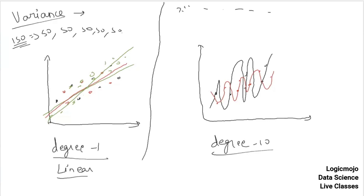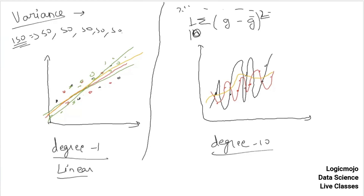Variance is calculated using a formula similar to the standard variance formula. If I train 10 such models, n equals 10. There will be multiple estimated models g, and a mean g. Variance measures how much my model varies when I change the data slightly. For the linear model the model was stable — that's low variance. For the degree-10 model, the model changed a lot — that's high variance.